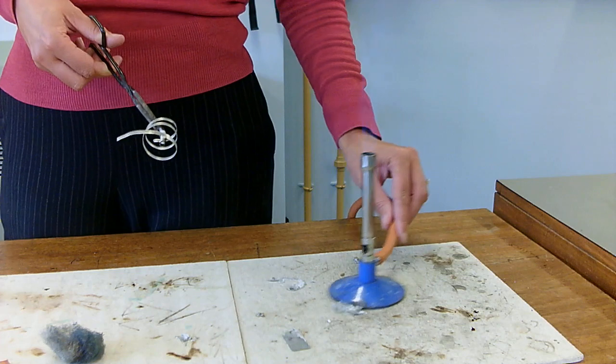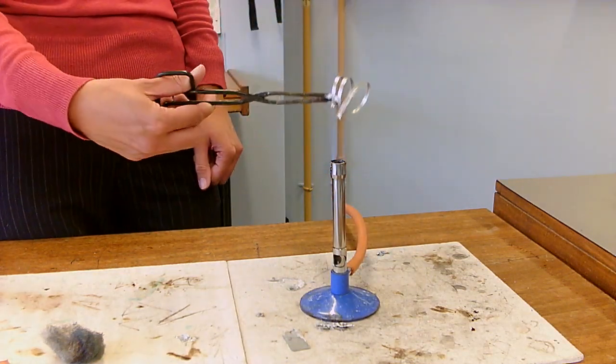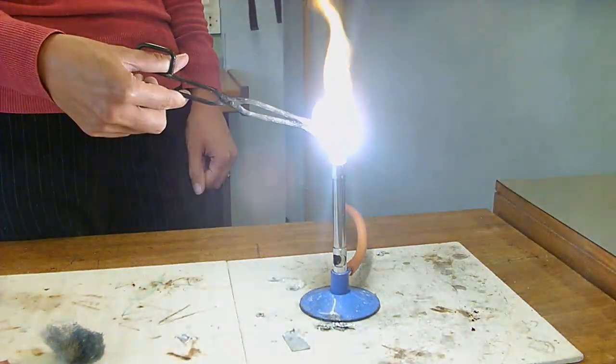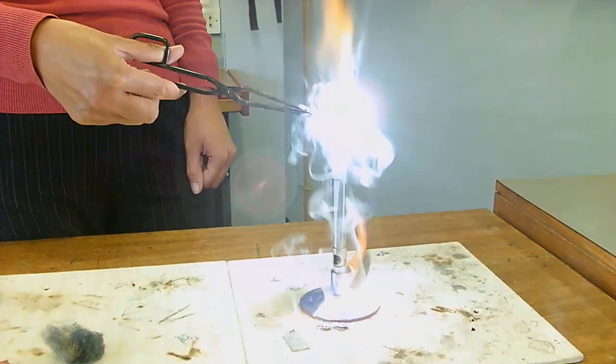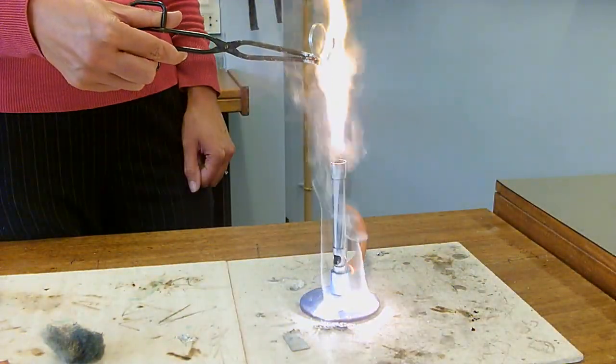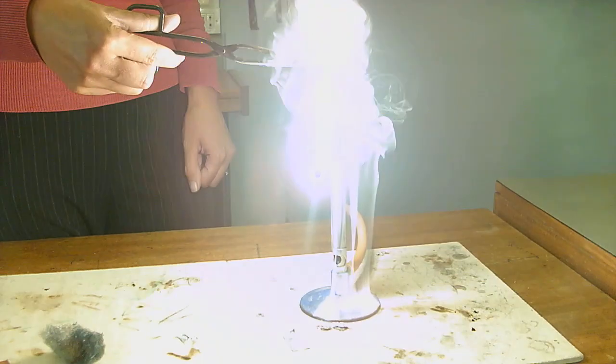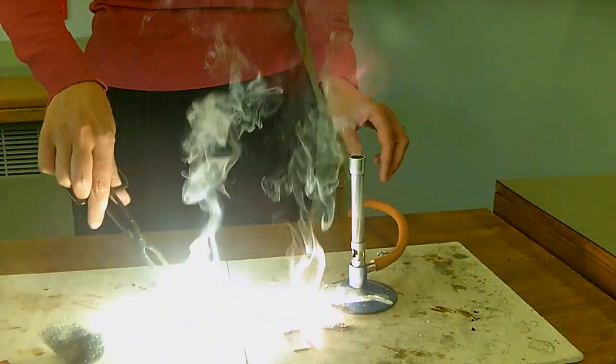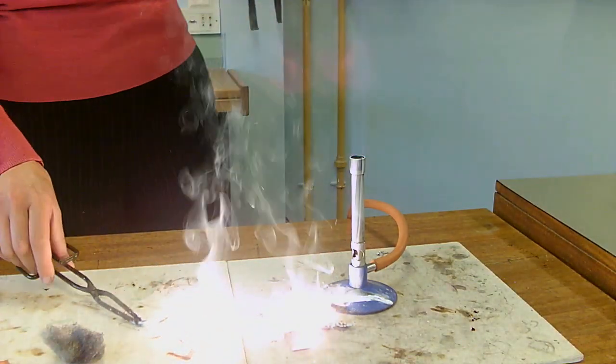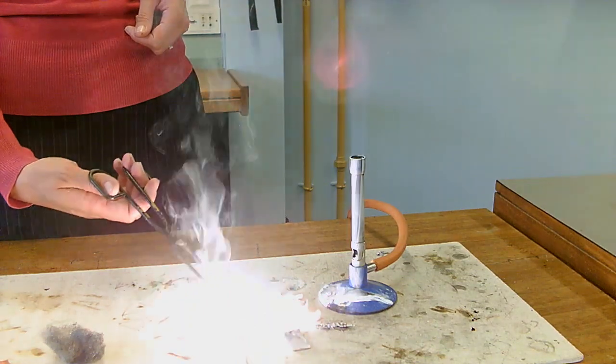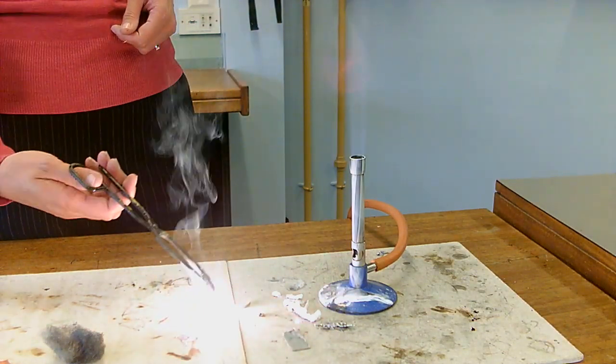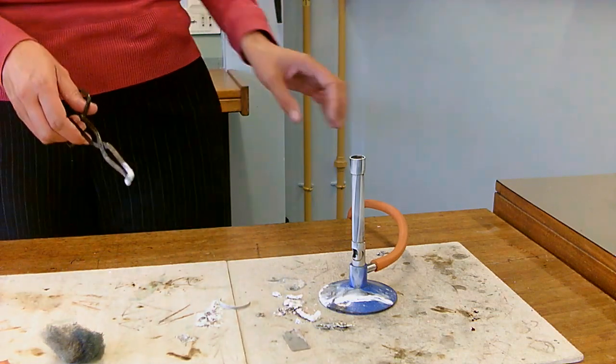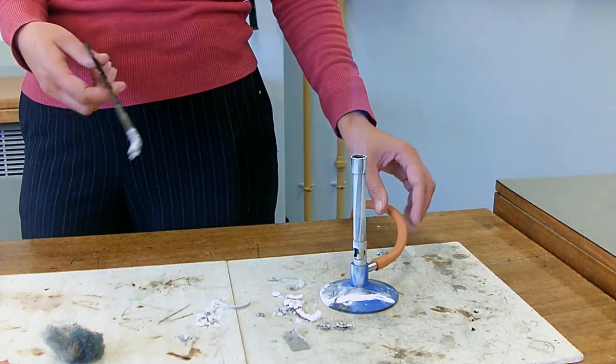Okay, so. Hopefully, you would have seen that that reacted really quickly with a very bright flame. And it's made this tiny white powder, magnesium oxide. But it reacted faster than any of the others.